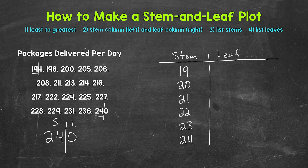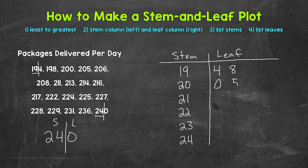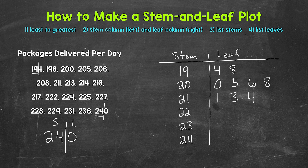Now we need to list our leaves, going in order starting with 194 — stem of 19, leaf of 4. Then 198 — stem of 19, leaf of 8. Next 200 — move down to stem of 20, leaf of 0. Then 205 — leaf of 5. Then 206 — leaf of 6. Then 208 — leaf of 8. Next 211 — move down to stem of 21, leaf of 1. Then 213 — leaf of 3. Then 214 — leaf of 4. Then 216 — leaf of 6. Then 217 — leaf of 7.